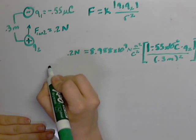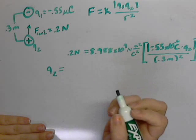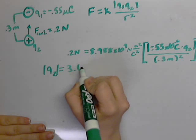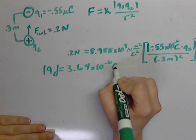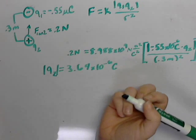Doing a little bit of algebra and isolating Q2 on one side of the equation, you should get about 3.64 times 10 to the negative 6 coulombs. That ends part A.